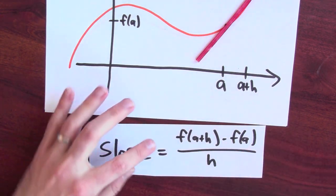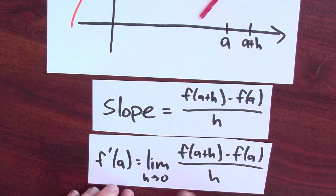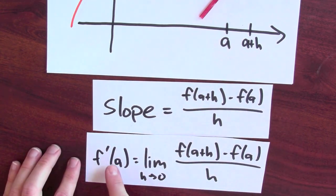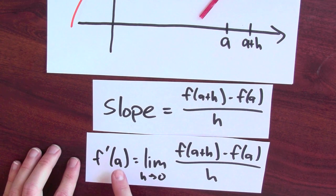Now, if I take the limit as H goes to zero, I get the limit as H goes to zero of this slope. We've seen this, this is the derivative of the function at the point A.